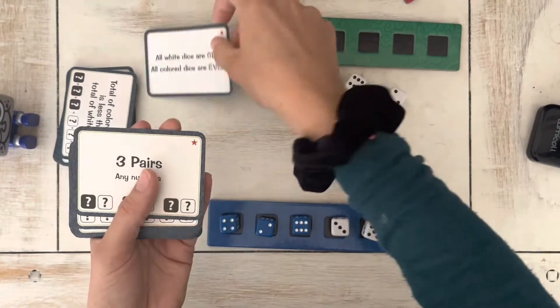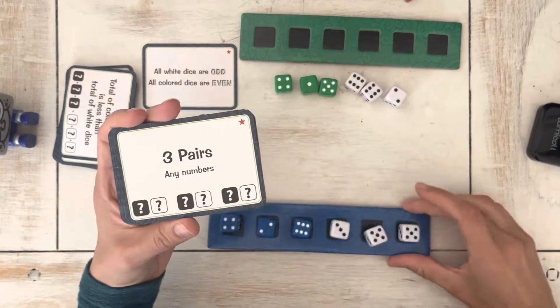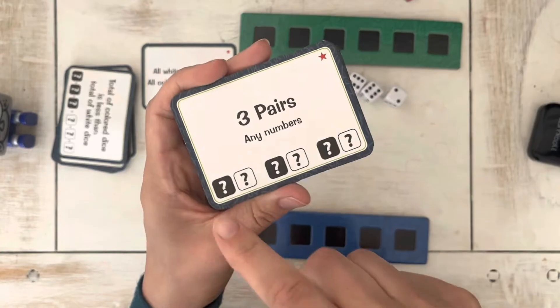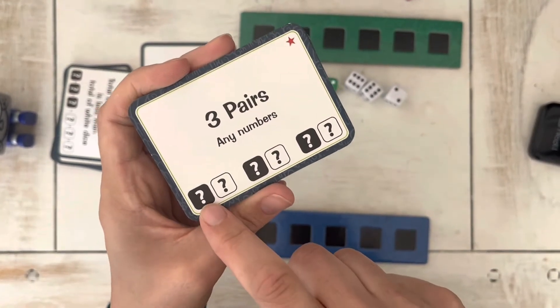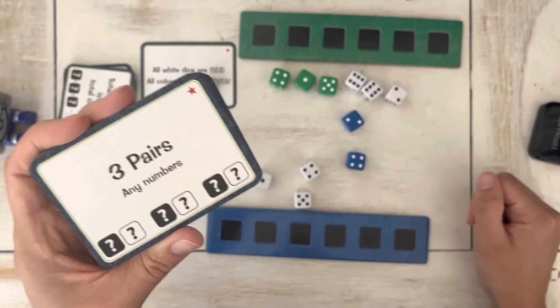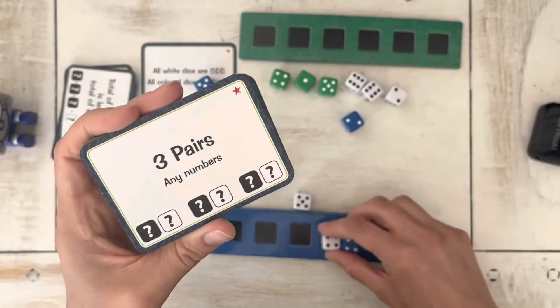And then another example, you would be rolling three pairs of any number. So this one would have like a suggested black and white pair, black and white pair, black and white pair. So you could roll until you have three pairs of any number.